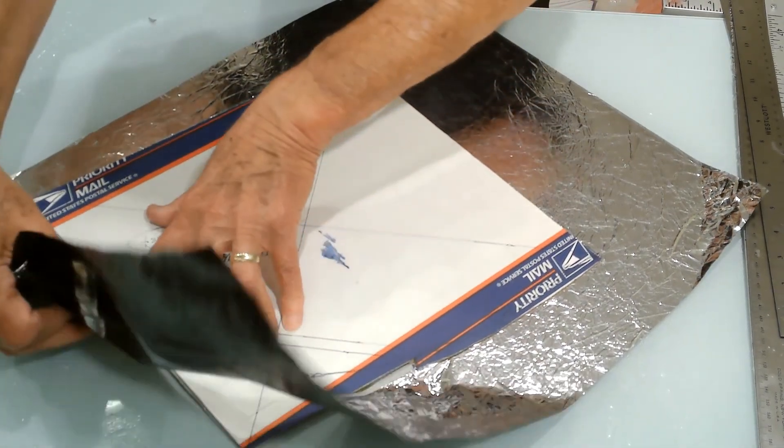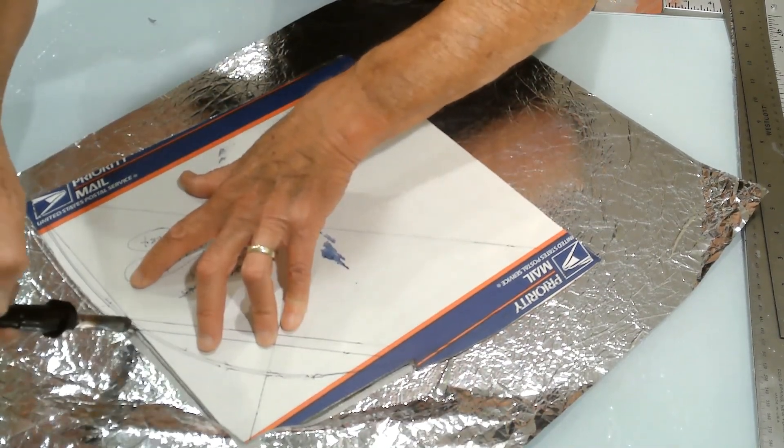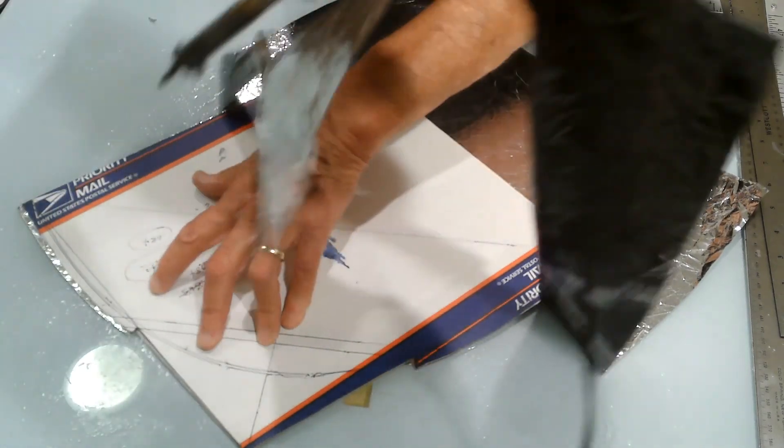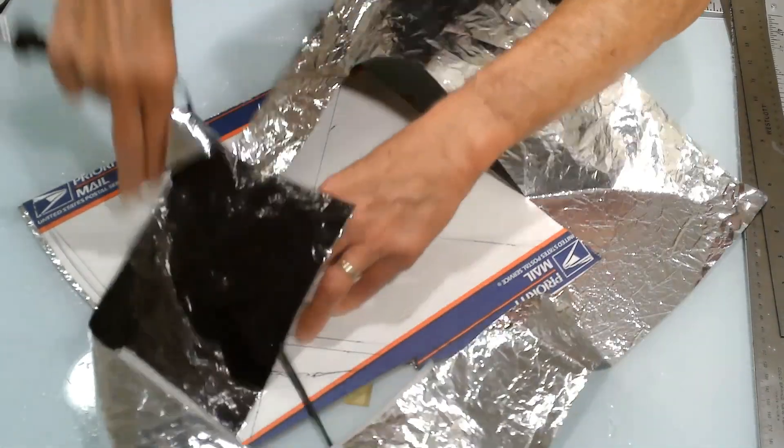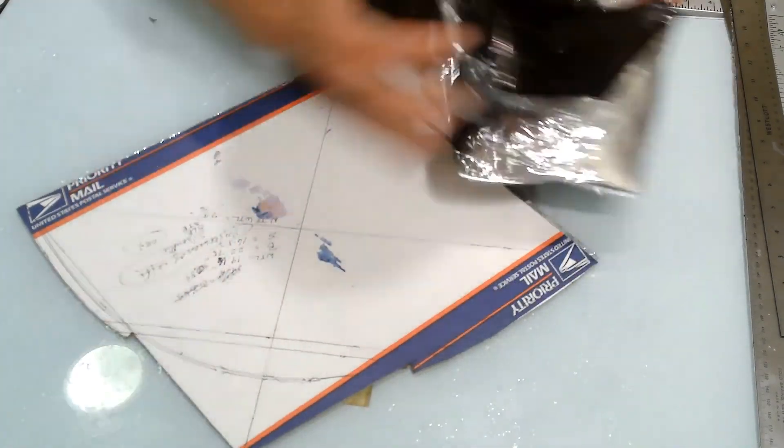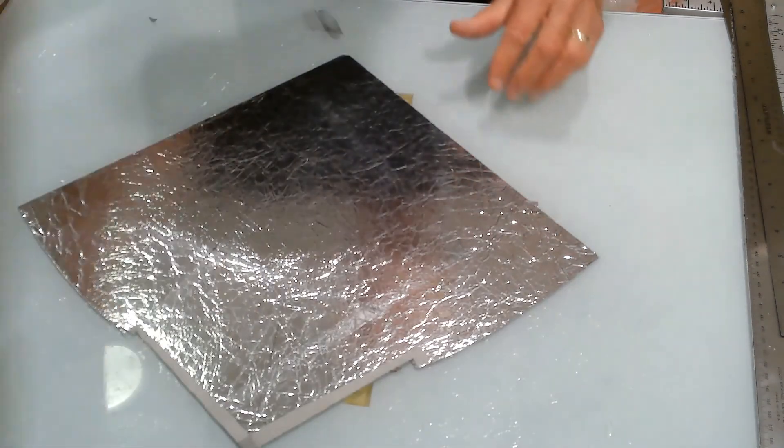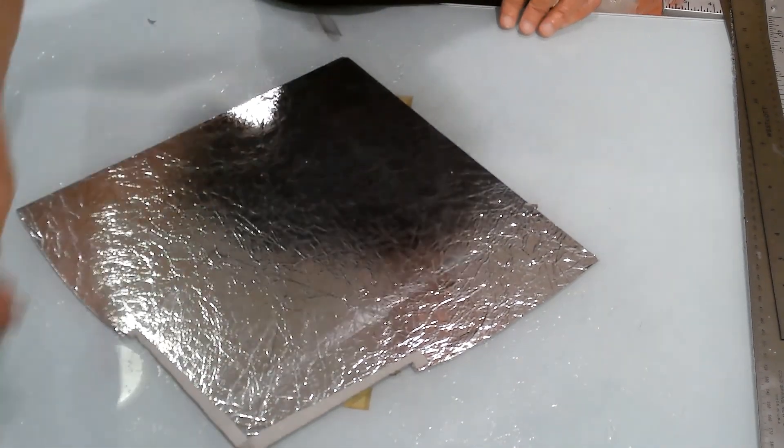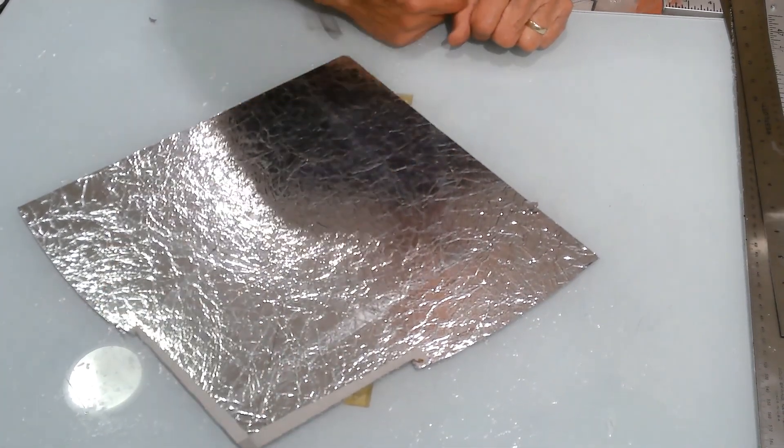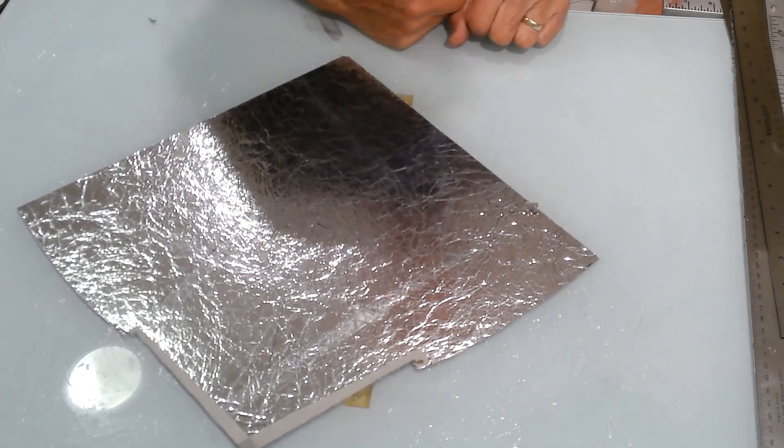Then I just lift it up. Sometimes I don't get it all cut, so I have to redo it a little bit. So now the kite sail is cut out, and I have the nose reinforcement already on it. Now all I need to do is build the kite.